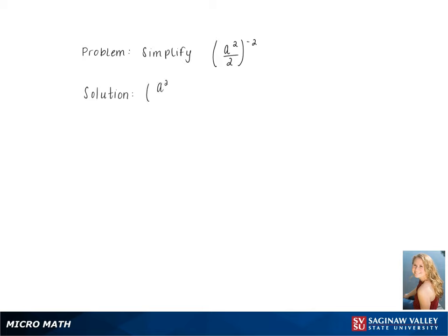To simplify the problem, a squared over 2 raised to the negative 2, we first start by distributing the exponent, giving us a to the negative 4 and 2 to the negative 2. Flipping the numerator and denominator gives us positive exponents. Then, simplifying, we get 4 over a to the 4th. This is our final answer.